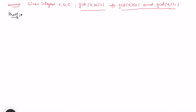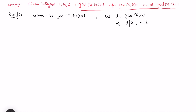I'll first take the forward direction: given that gcd(a, bc) = 1, I want to prove the other way. Let me take d as the gcd(a, b). Now because d is the gcd(a, b) and we want d to come out to be 1 — by definition, d divides a and d divides b. Now because d divides b, this implies d divides bc as well, since it divides every multiple of b.